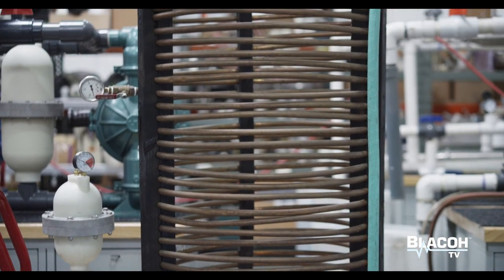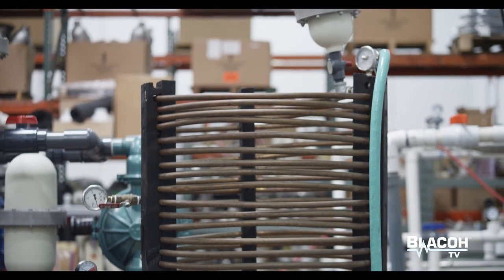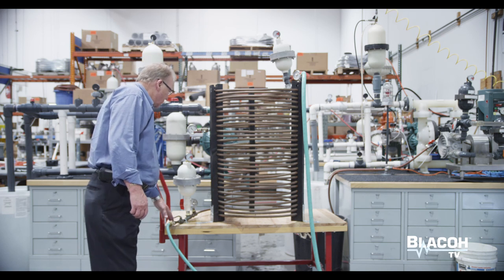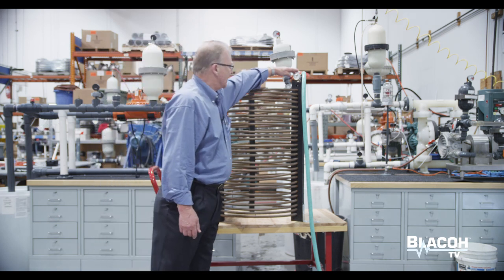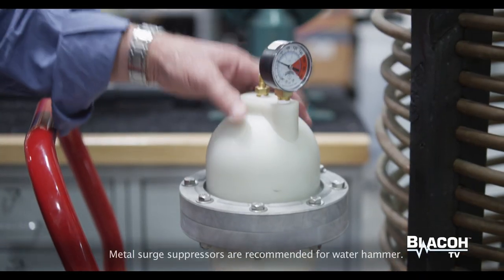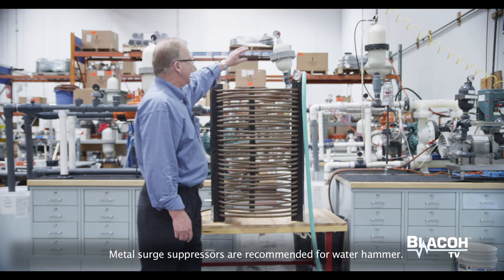We have about 200 feet of half-inch copper coil with a valve on the discharge and a valve on the inlet side of the coil, and a surge suppressor at the discharge point and a surge suppressor at the inlet point of the coil.